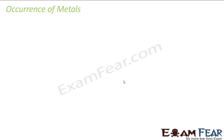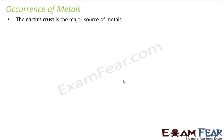Now we have studied metals, non-metals, and the reaction of metals. Where do metals occur? Where can we find these metals? The earth crust is the major source of all the metals — it is the mother earth which gives most of the metals to us.